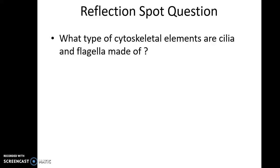Let's pause and recollect: what are the cytoskeletal elements of which cilia and flagella are made up? You have studied that cilia and flagella help in motility and are made up of a particular kind of cytoskeletal element. Yes — cilia and flagella are made up of microtubules.